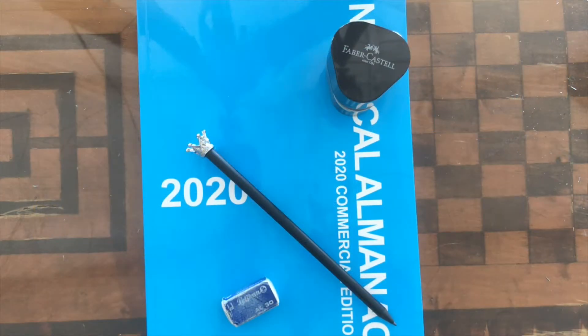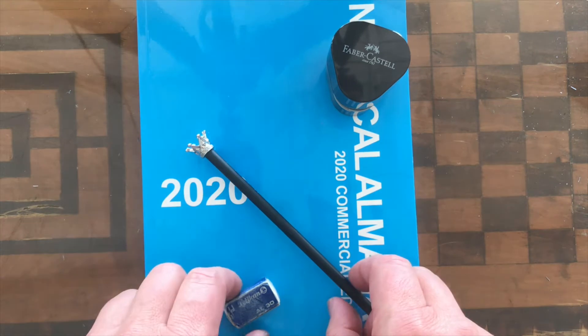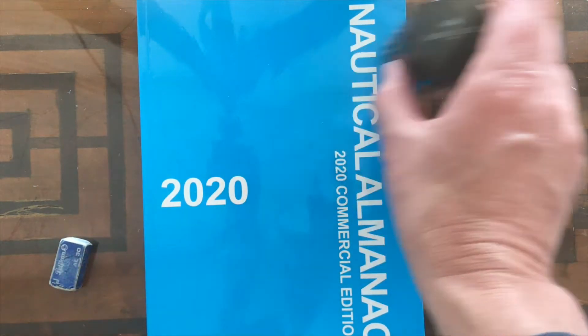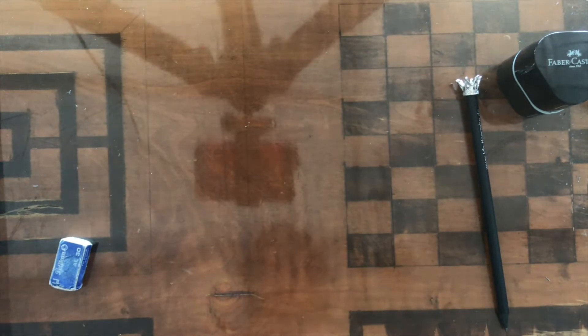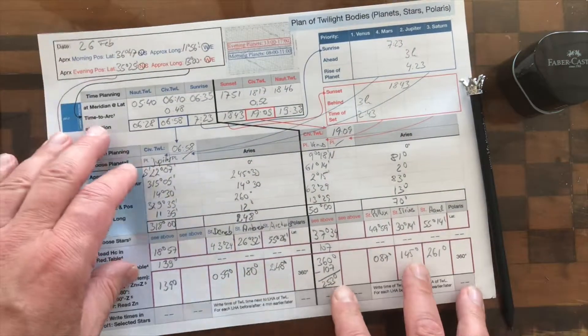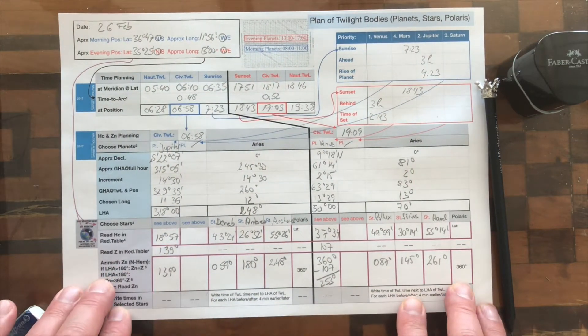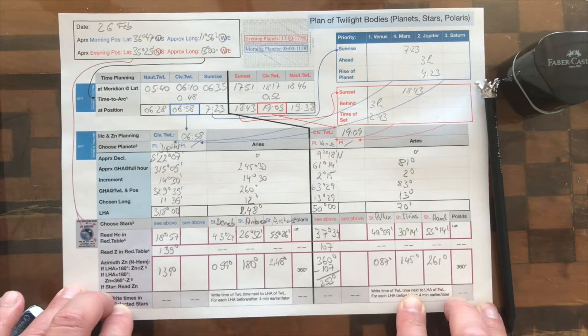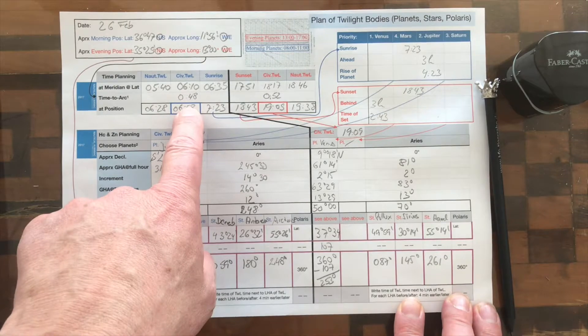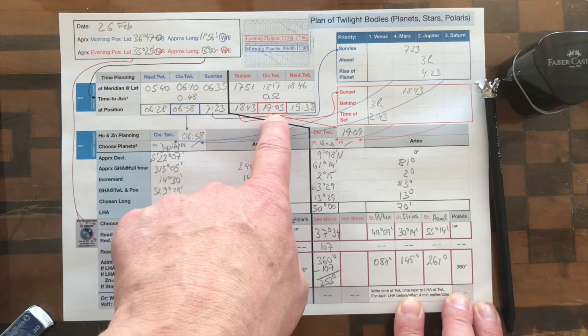Dear Regina Sailing family and friends, we are back here. We are still doing our preparation for the twilight shooting. This time we go back to our template which we have filled in. What we have done is that we know at which time we should shoot in the morning and in the evening.